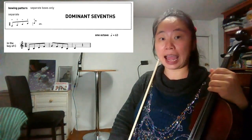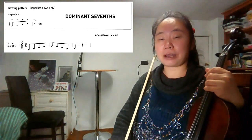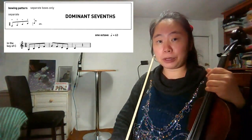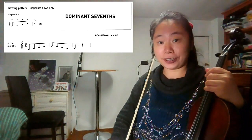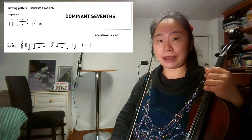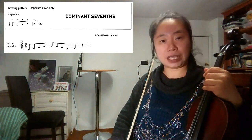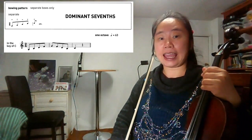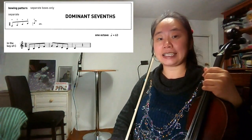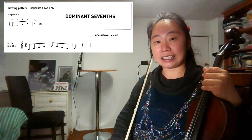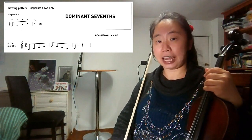We will start on G. And from G, we will play a 3rd above, which is B, and the 5th above is D, and the 7th above is F.